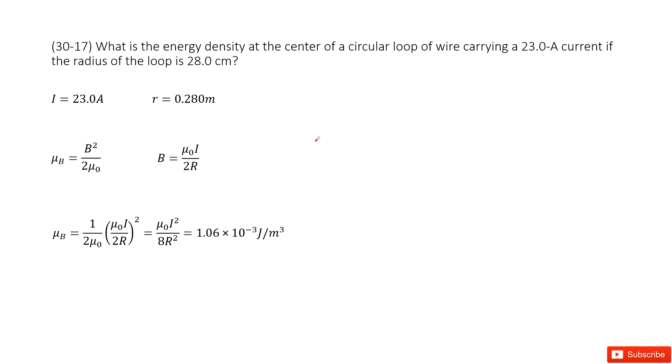We look at the problem. We need to find the energy density at the center of a circular loop of wire, right? The quantities given by this circular loop of wire: the current is 23A, and the radius is 0.28m.